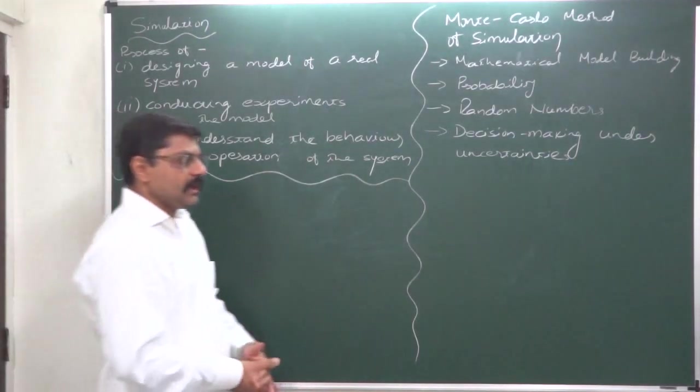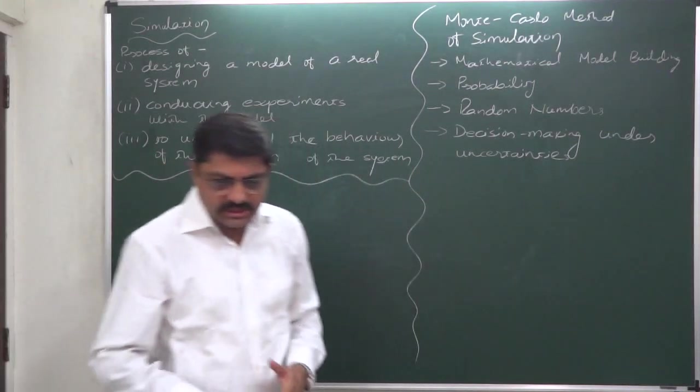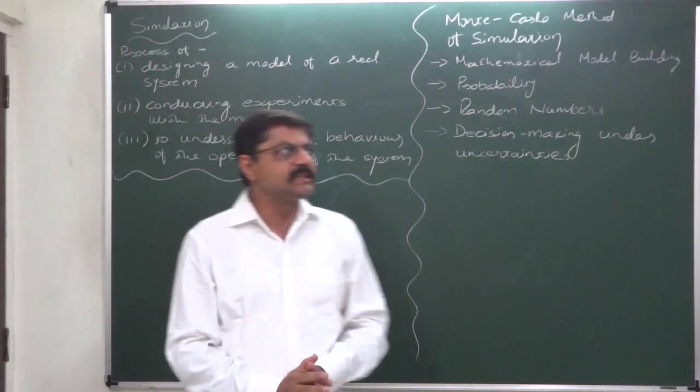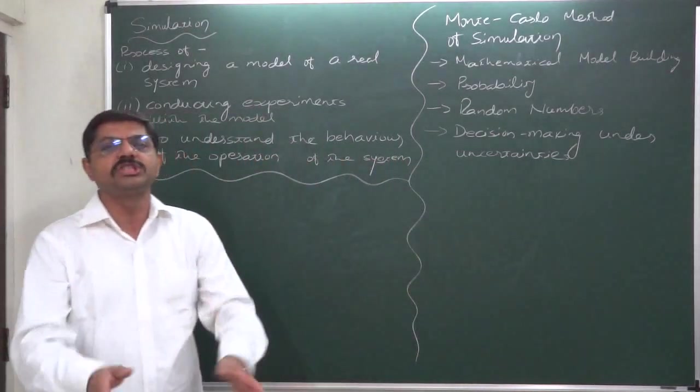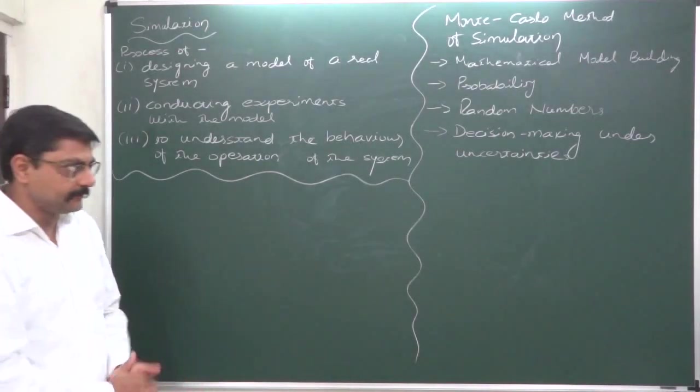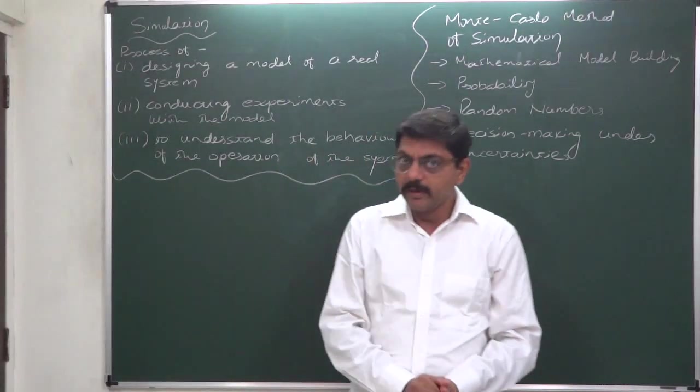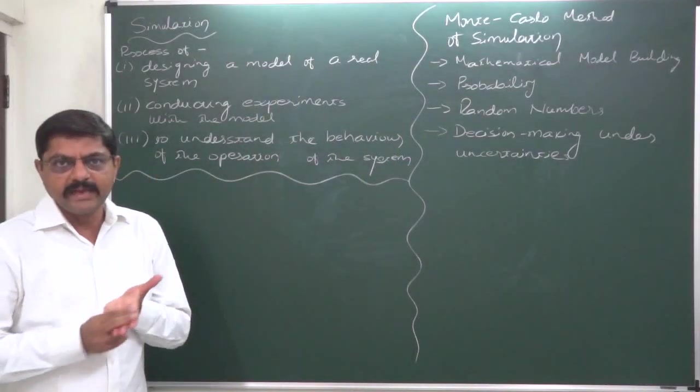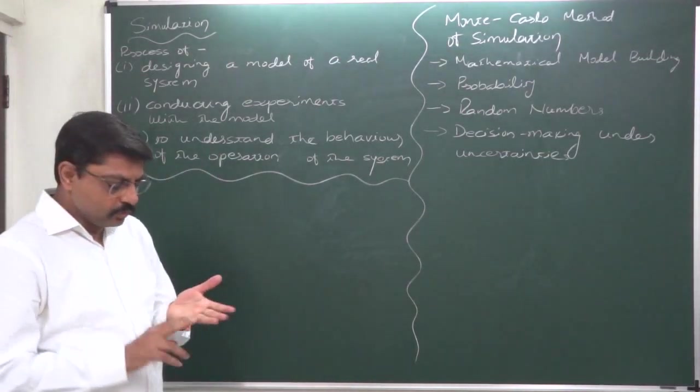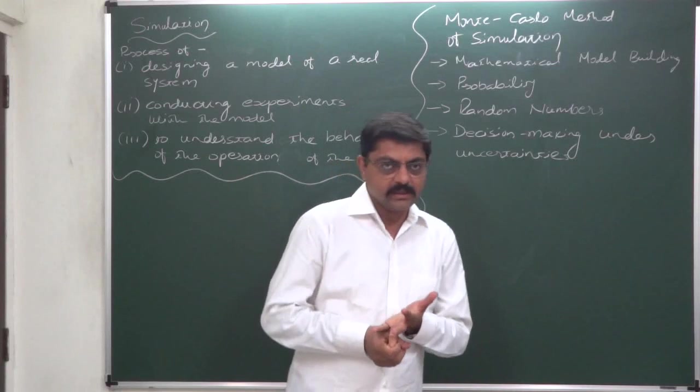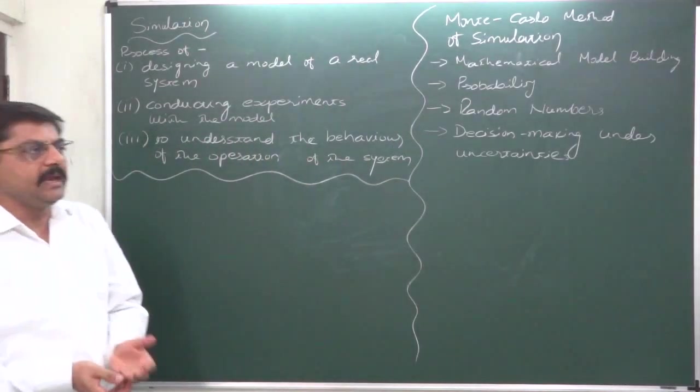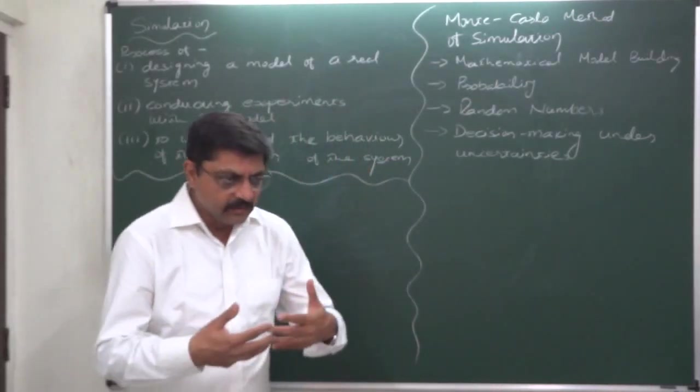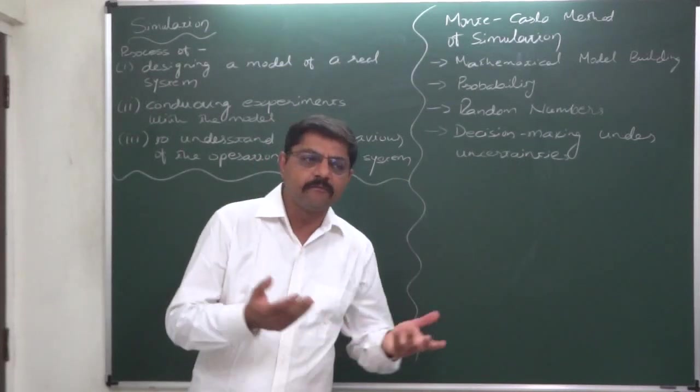Monte Carlo method is an experiment based on chance or probability. First, it is a model building based on probabilities. Second, it uses random numbers. Third, it requires decision making under uncertainties, so it results as a tool helpful in decision making under uncertainties.